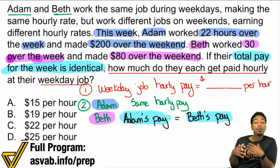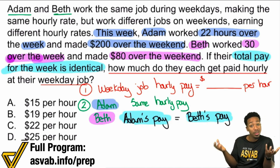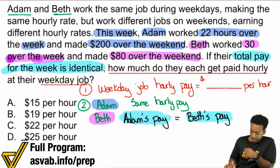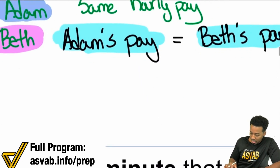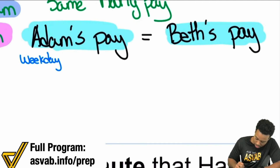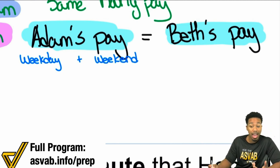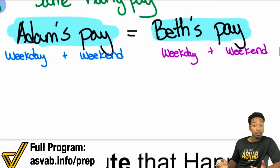The reason I highlight that is because when we build our equation to solve this, the great thing is that we know that if we set up Adam's total pay, we can set it equal to Beth's total pay because they were paid the same amount of total money. Now we're going to use the clues in blue and purple — blue for Adam, purple for Beth — and add everything in there. So: Adam's pay is weekday plus weekend, and Beth's pay is weekday plus weekend. Let's find out what their weekday pay and weekend pay was.